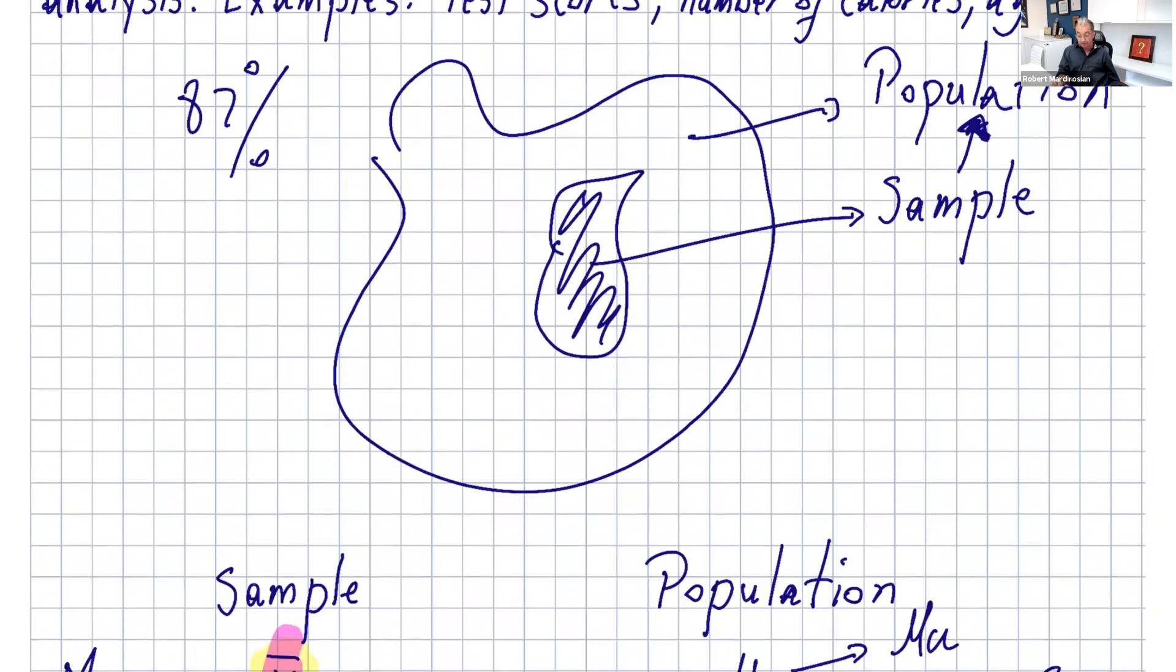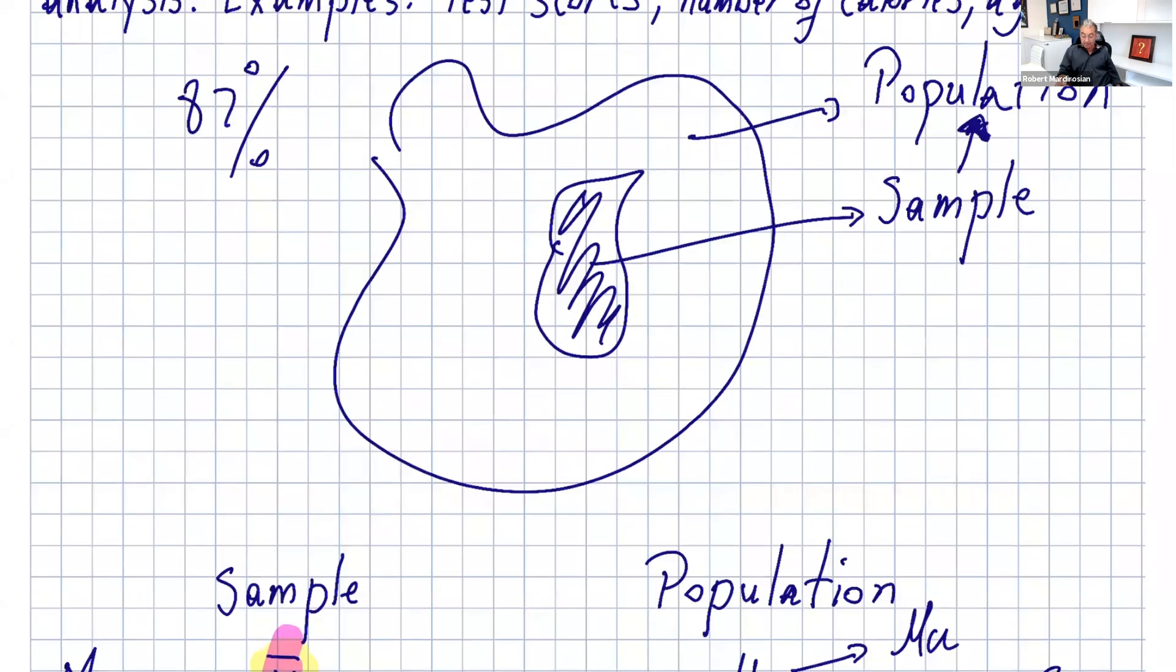When we deal with statistics, we always have a population, which can be very large, or sometimes it's not that large. But inside the population, we have samples. So sample is part of the population.